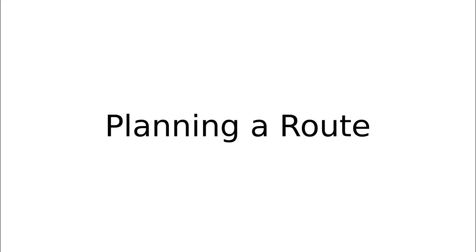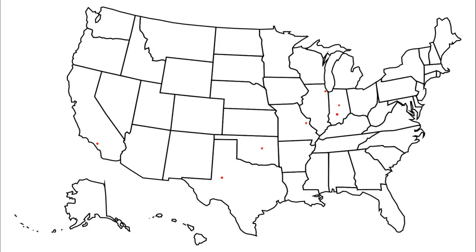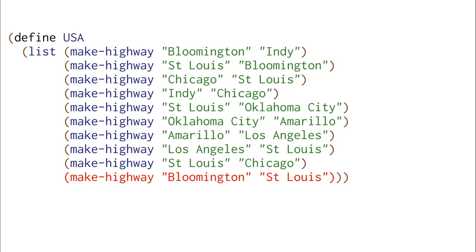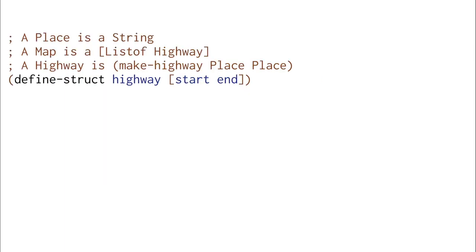Let's return to thinking about planning routes. We'll start by recalling what we saw last time. Here's our map of the United States and here's our roads going through it. Here's our USA highway map as a data structure. We've added one more link so that you can go directly from Bloomington to St. Louis. Here's our data definition for highways, maps, and places.